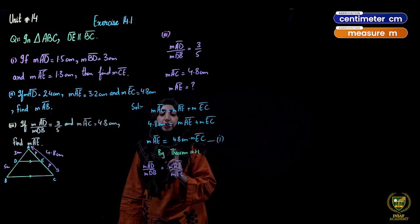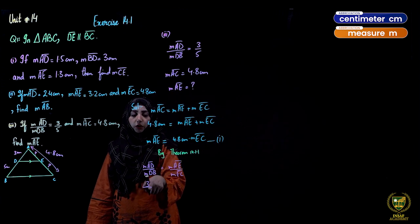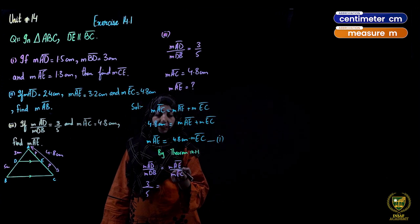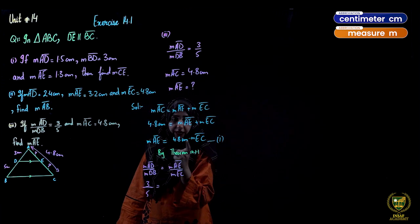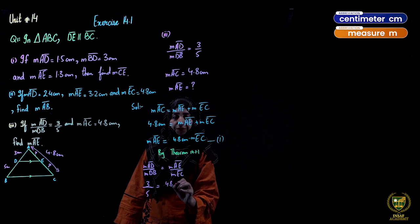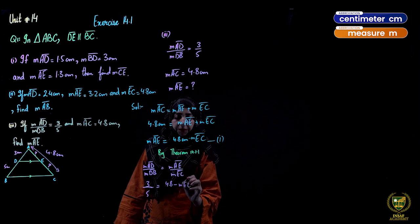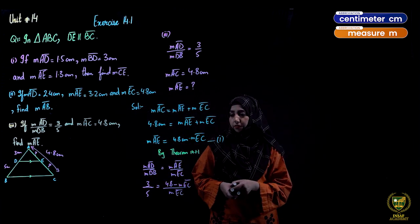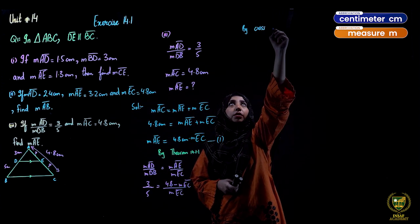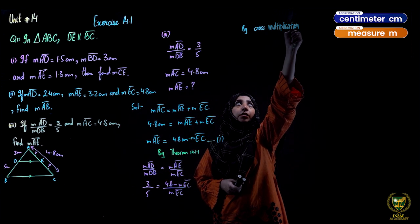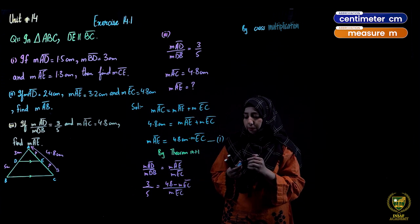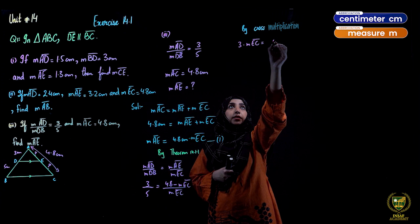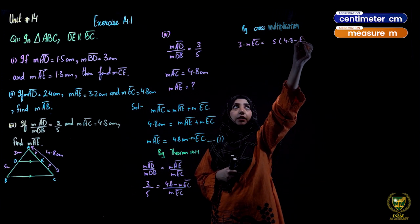Substituting all values (without units for clarity): 3 upon 5 = (4.8 − measure EC) upon measure EC. By cross multiplication: 3 × measure EC = 5 × (4.8 − measure EC), which gives 3 × measure EC = 24 − 5 × measure EC.